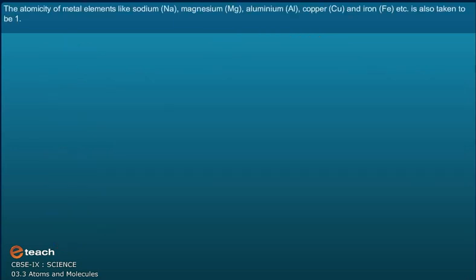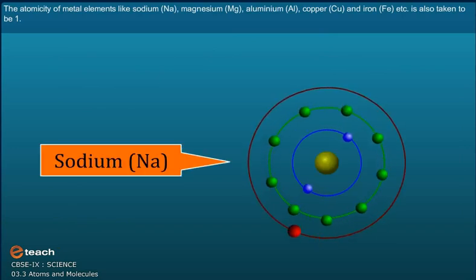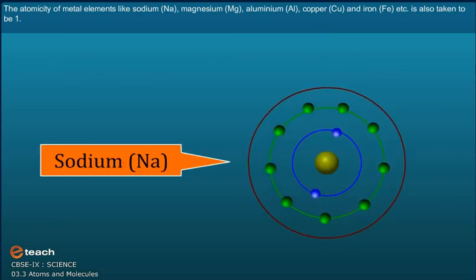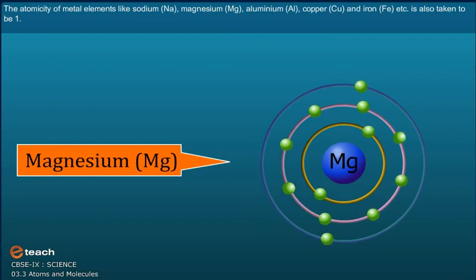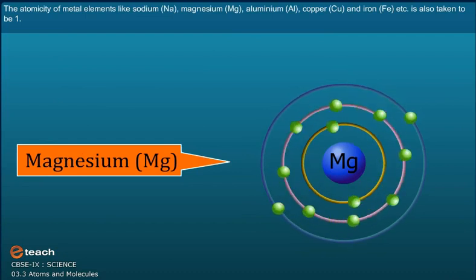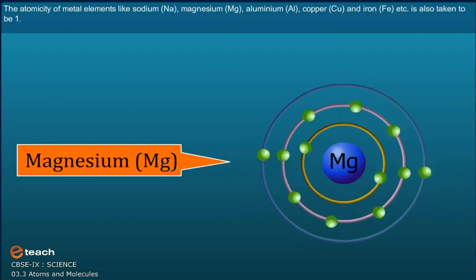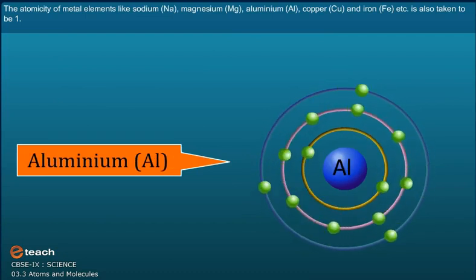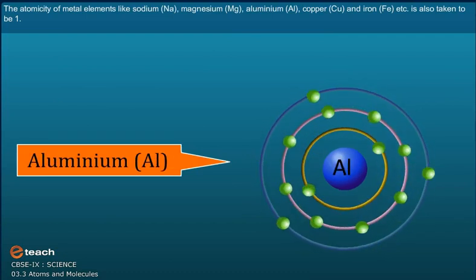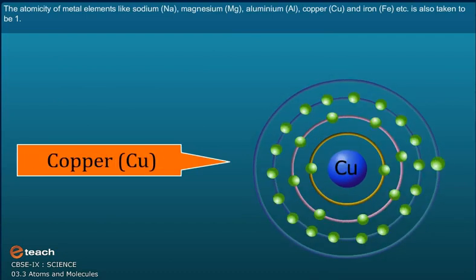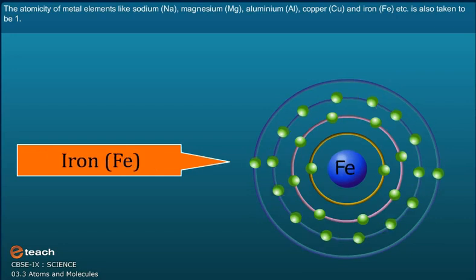The atomicity of metal elements like sodium (Na), magnesium (Mg), aluminum (Al), copper (Cu) and iron (Fe), etc., is also taken to be one.